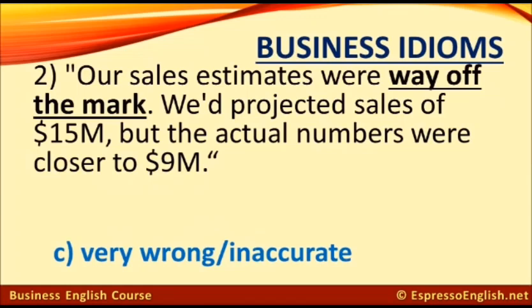Way off the mark means C — very wrong or inaccurate. This idiom comes from the sport of archery, where arrows that do not hit the target are said to be off the mark. The word 'way' means very, so 'way off the mark' means very inaccurate.